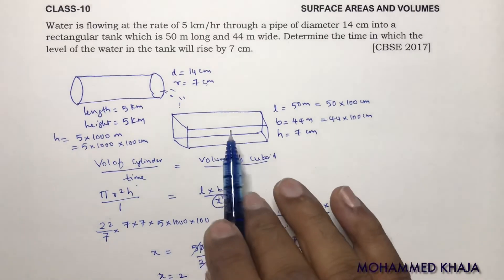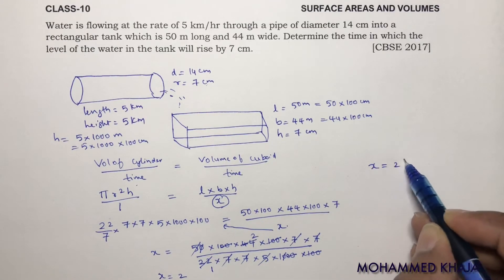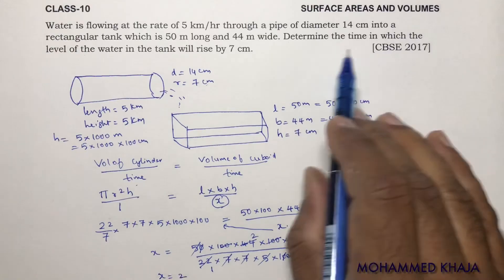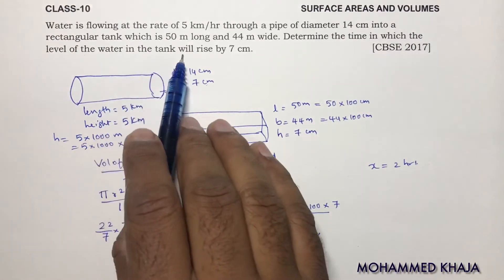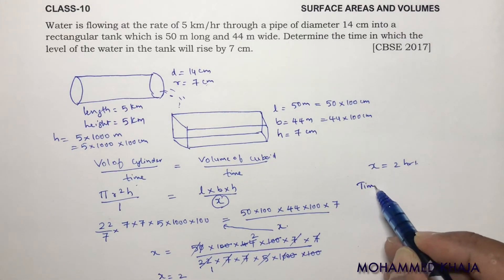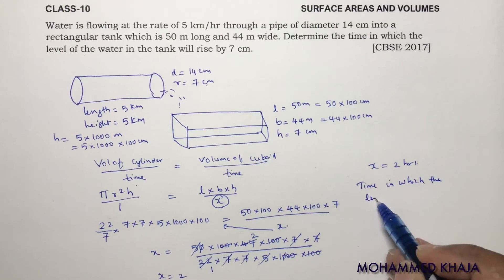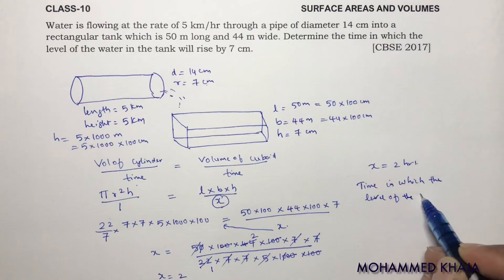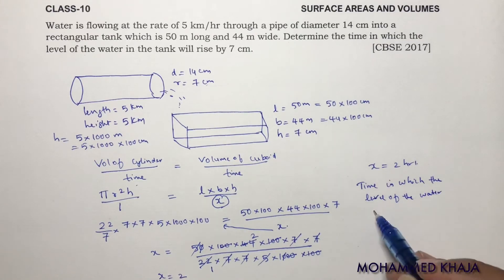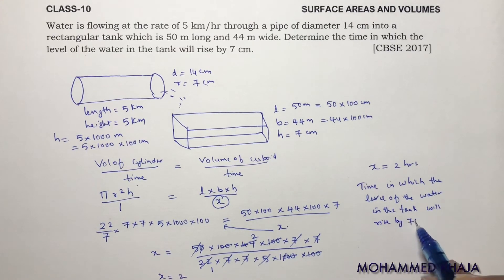So to fill this tank, it will take 2 hours. So x equals 2 hours. So time in which the level of the water in the tank will rise by 7 centimeters is 2 hours.